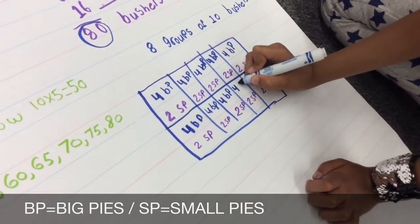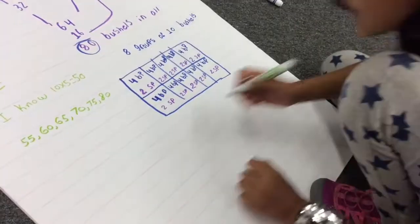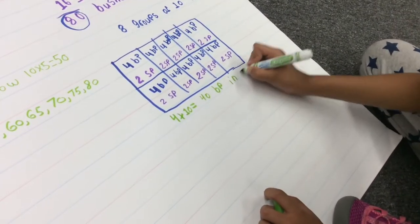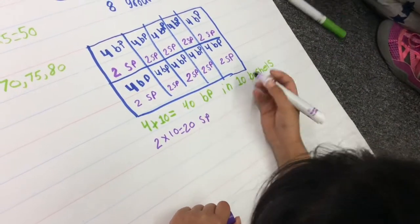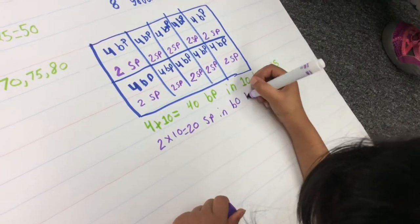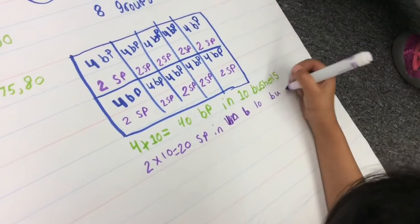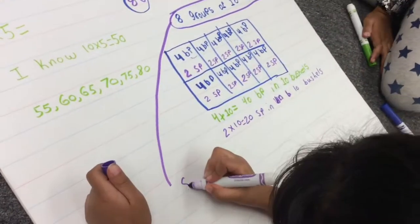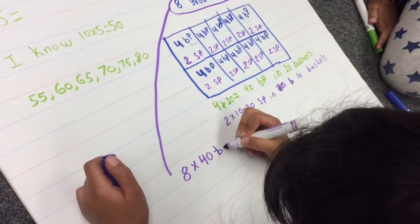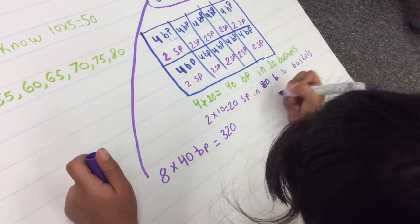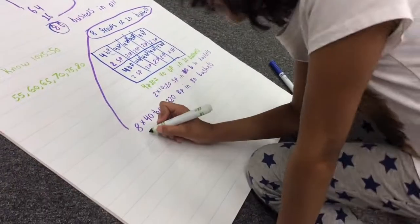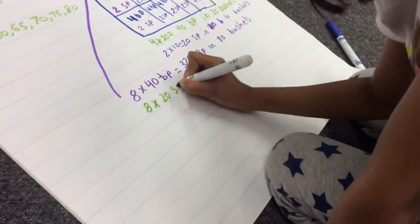Each bushel of apples could be used to make four big pies and two small pies. Four big pies times ten bushels is forty big pies for ten bushels. Two small pies times ten bushels is twenty small pies for ten bushels. Remember there were eight groups of ten bushels, so eight times forty is three hundred and twenty total big pies in eighty bushels. Eight times twenty small pies is one hundred and sixty total small pies in eighty bushels.